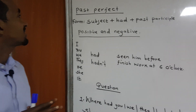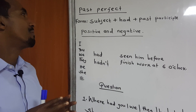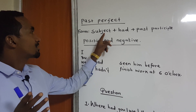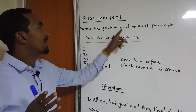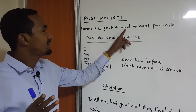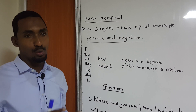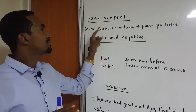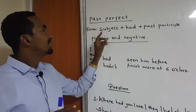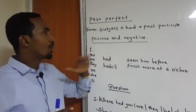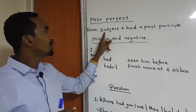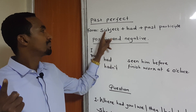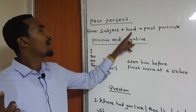The past perfect formula is: subject plus had plus past participle. Subject plus had — that means it is the same for all persons. All subject pronouns, all of them, take had.